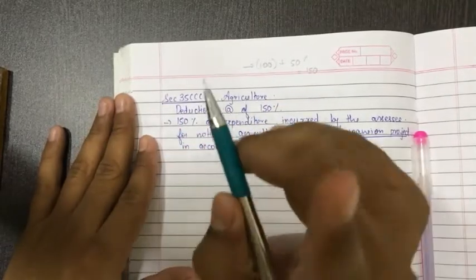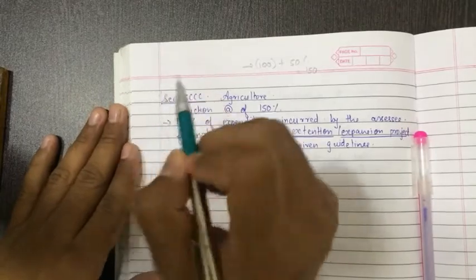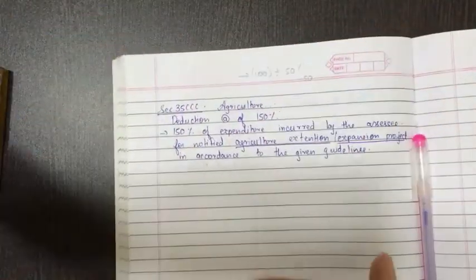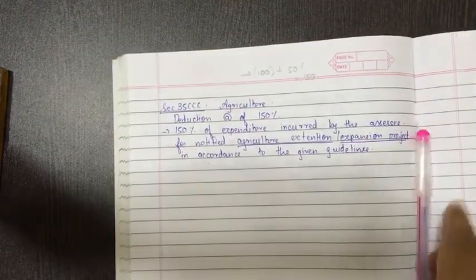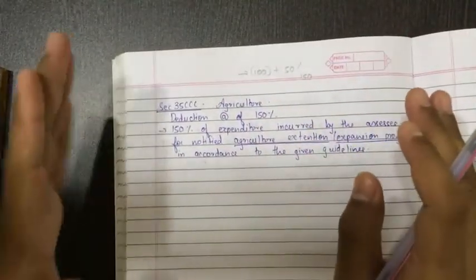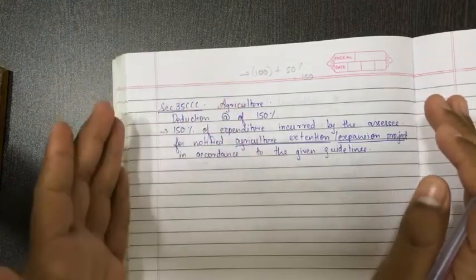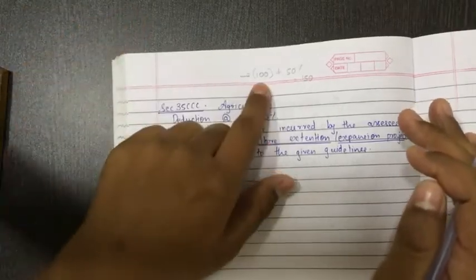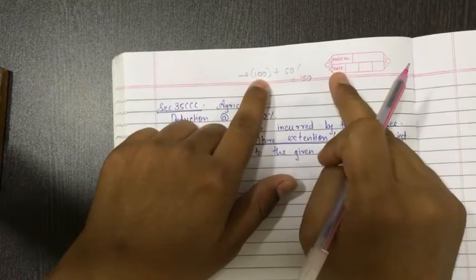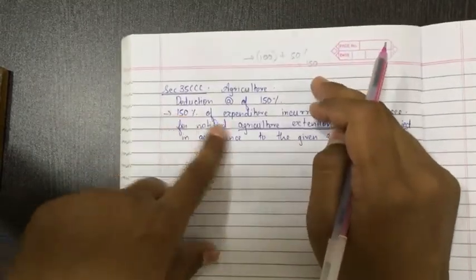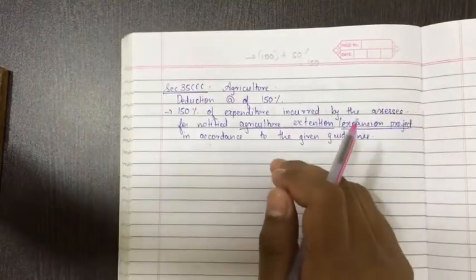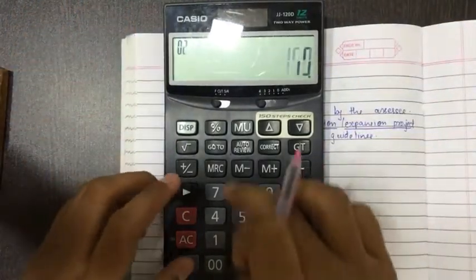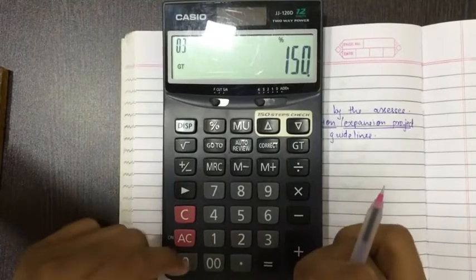Section 35CCC - just remember. I am not marking here a star, so remember it might come for theory. If it comes in the question, in the calculation of computation of the total income, in that sum you have to keep an eye. If they have given in the question agriculture extension or expansion project, if such expenses are there in the P&L account, then 100 percent expenses, that is rupees 100 will be allowed, plus 50 percent more will be allowed on that expenses. That's why it is given 150 percent reduction of the expenses. 150 percent means if 100 rupees you have spent, then 150 percent equals 150.